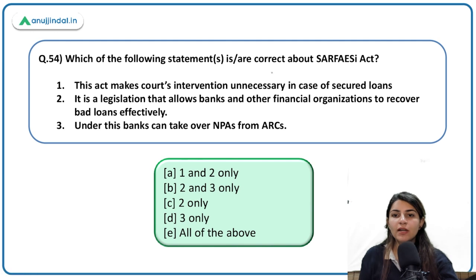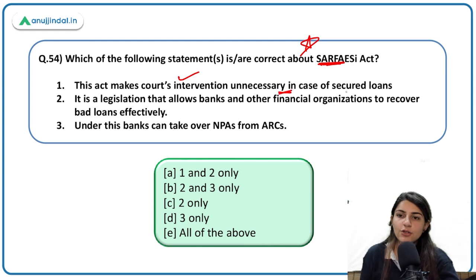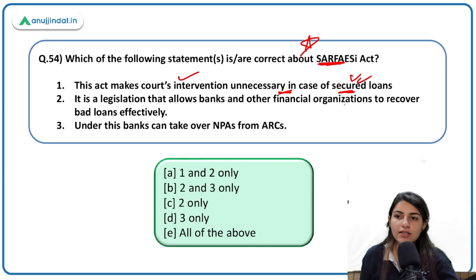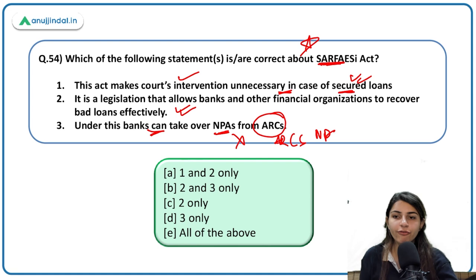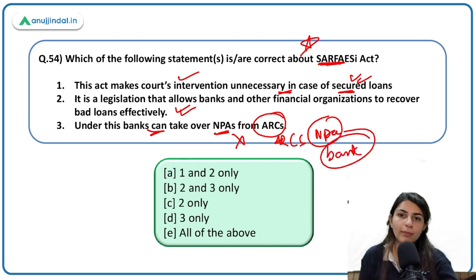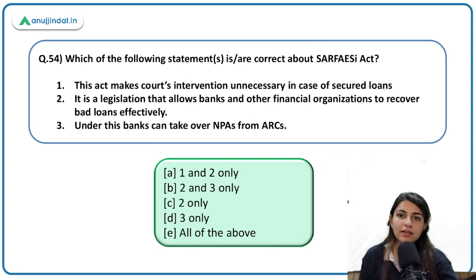About the SARFAESI Act: the act makes court intervention unnecessary in case of secured loans — correct. It is legislation that allows banks and financial organizations to recover bad loans effectively — correct. Under this, banks can take over NPAs from ARCs — incorrect; it is actually ARCs that can take over NPAs from banks. The third statement is incorrect.